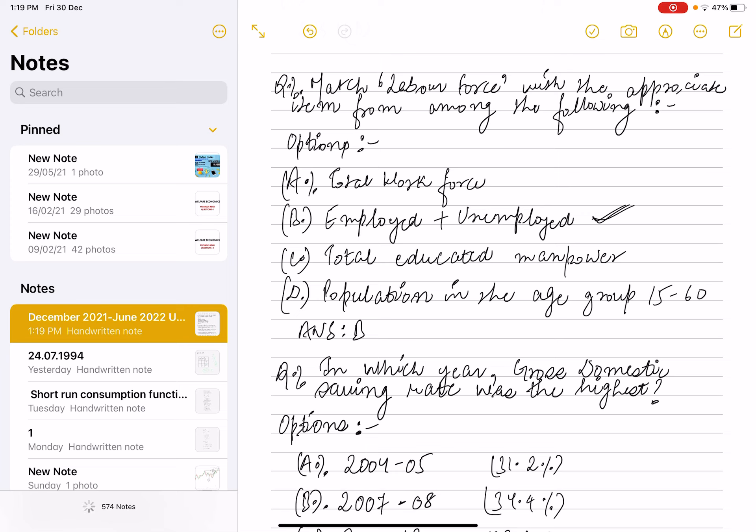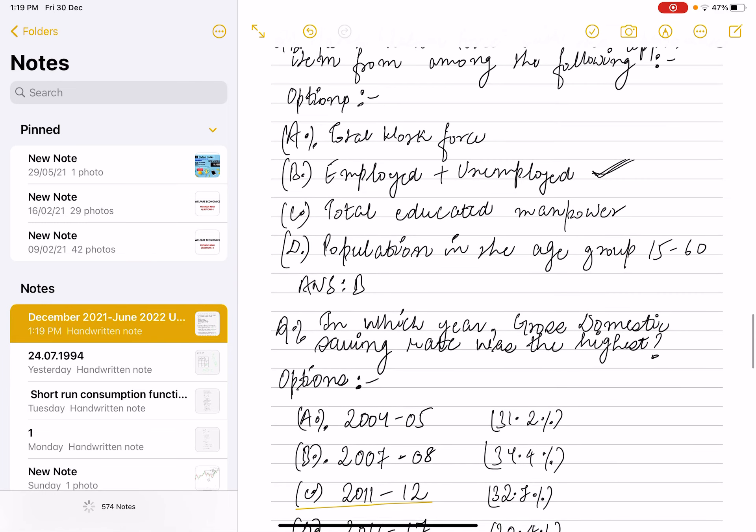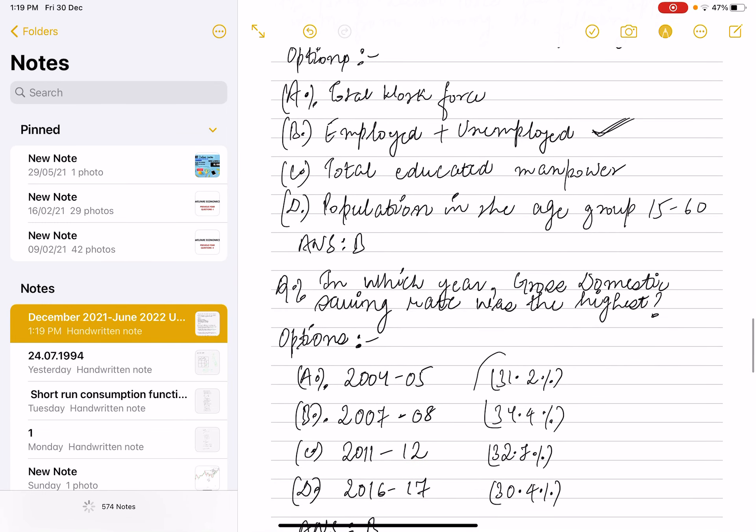Next question is: in which year was the gross domestic saving rate the highest? I have mentioned the years and rates below.